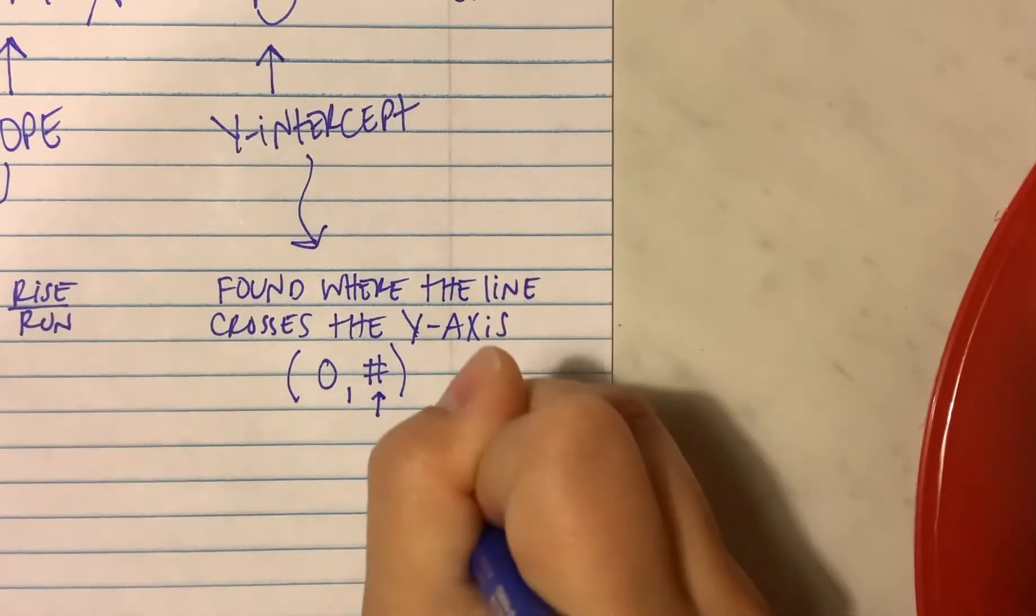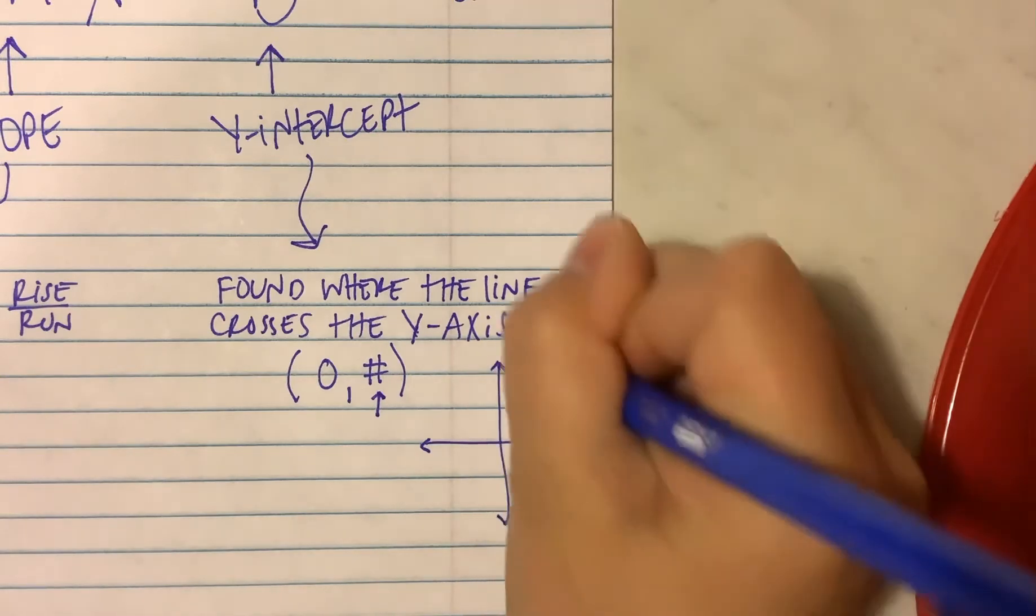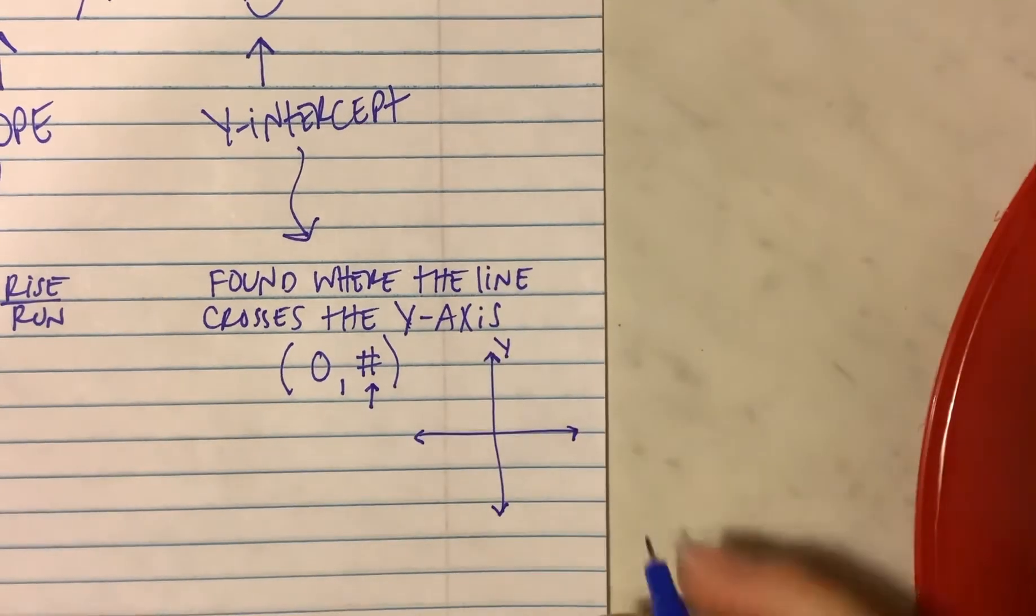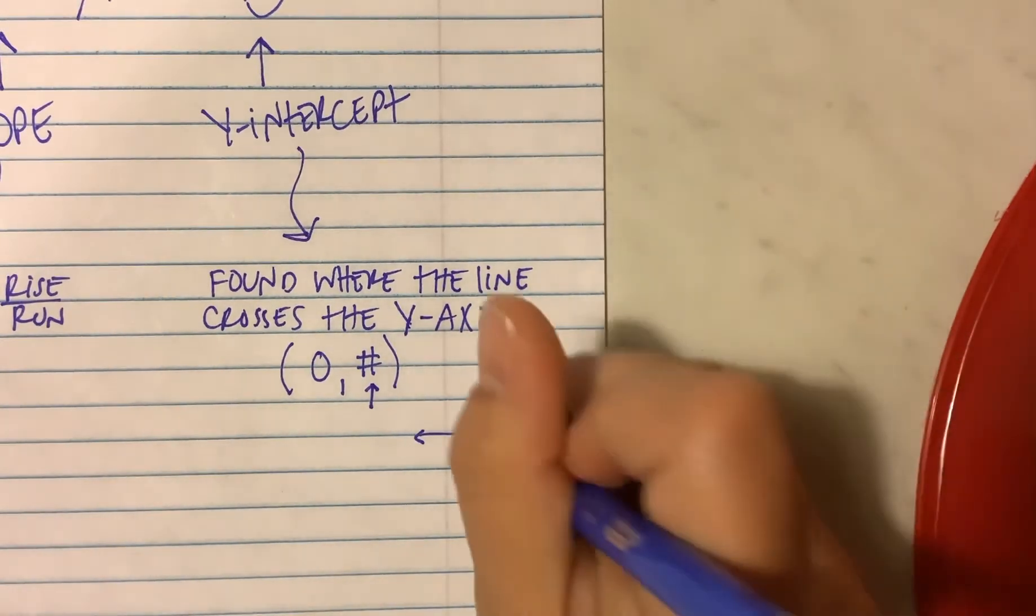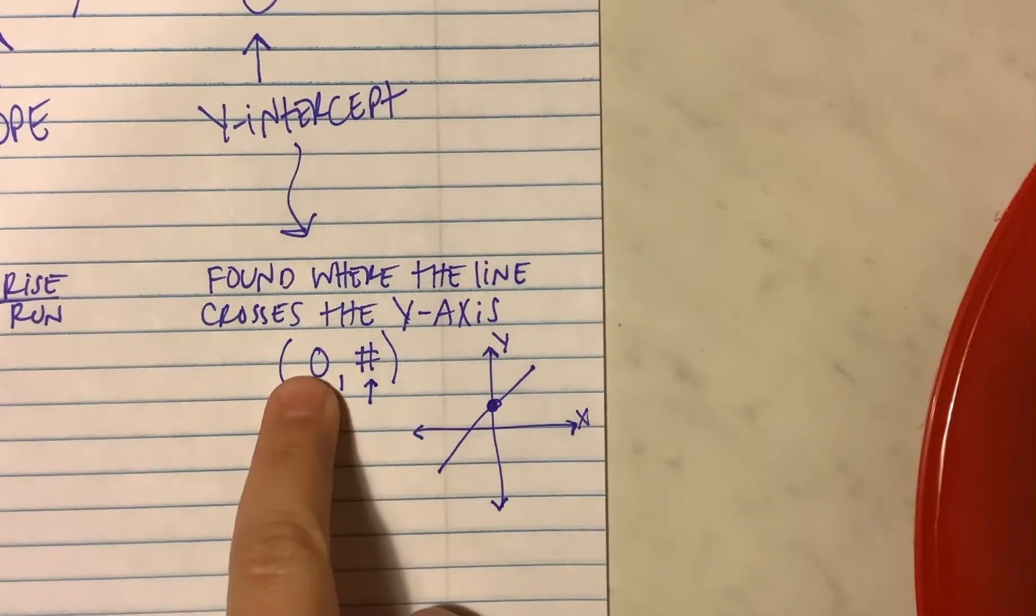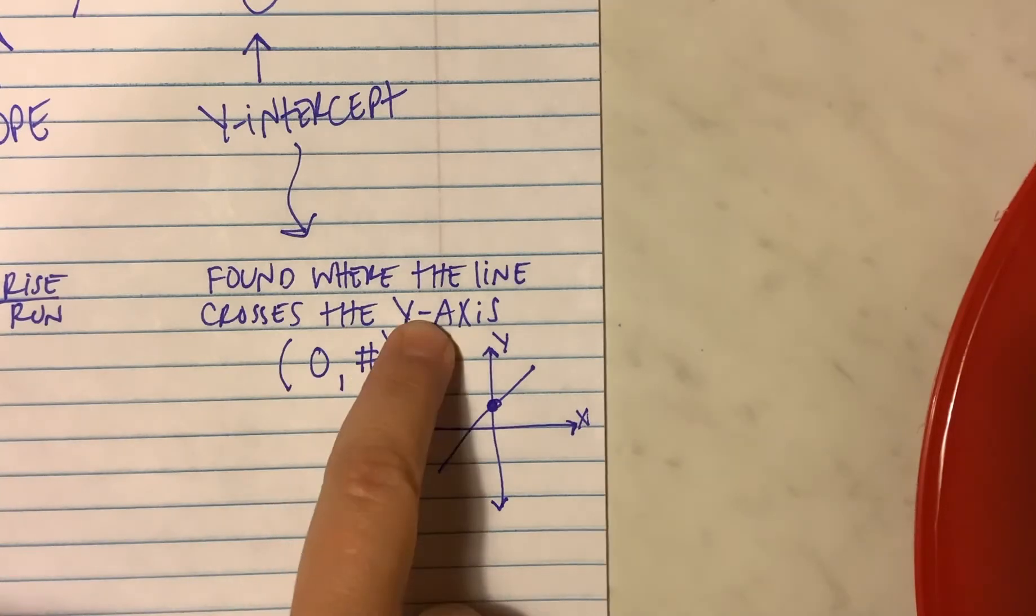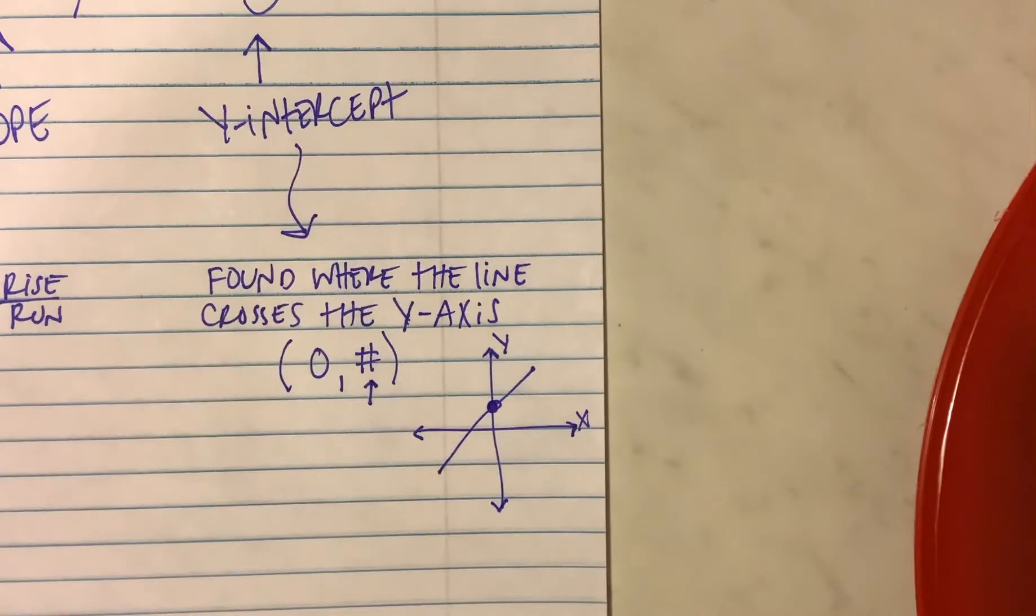Side note. Remember that a graph looks like this. The axis for the y-axis is that one, the x-axis is this one. If I drew a line on it, that little dot here would have a coordinate of 0 and then a number. Whatever that number is, is the y-intercept. We kind of know this stuff.